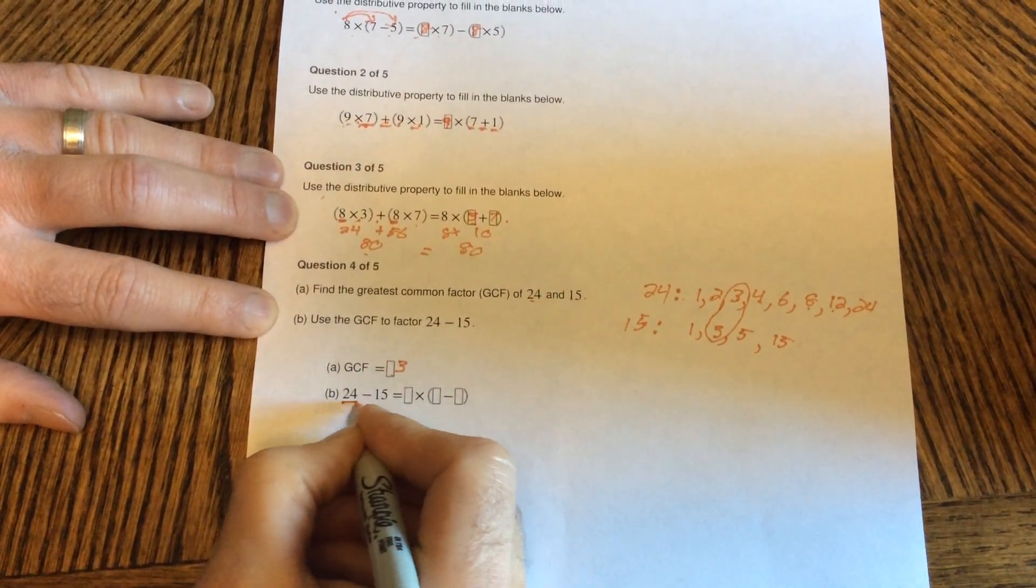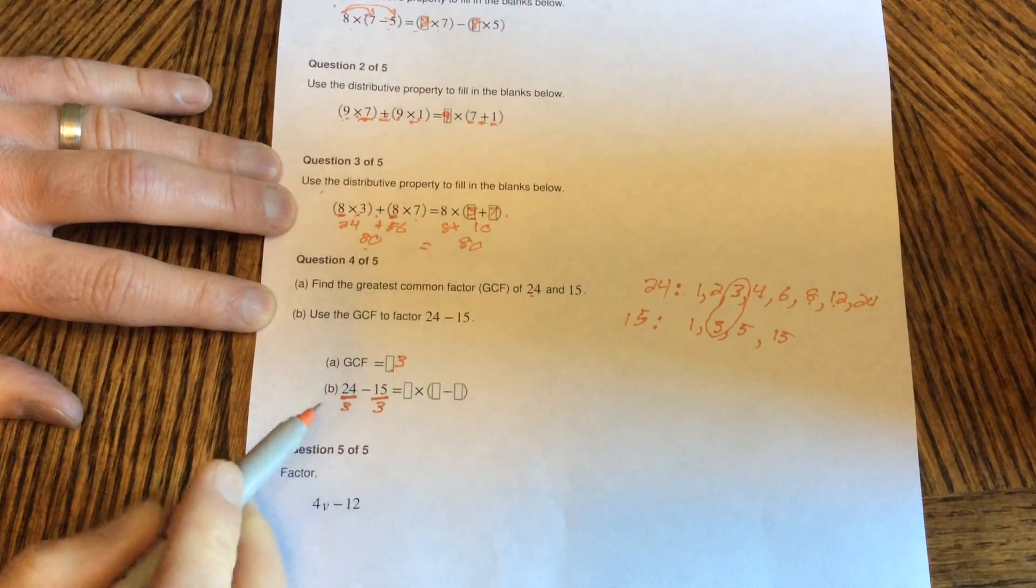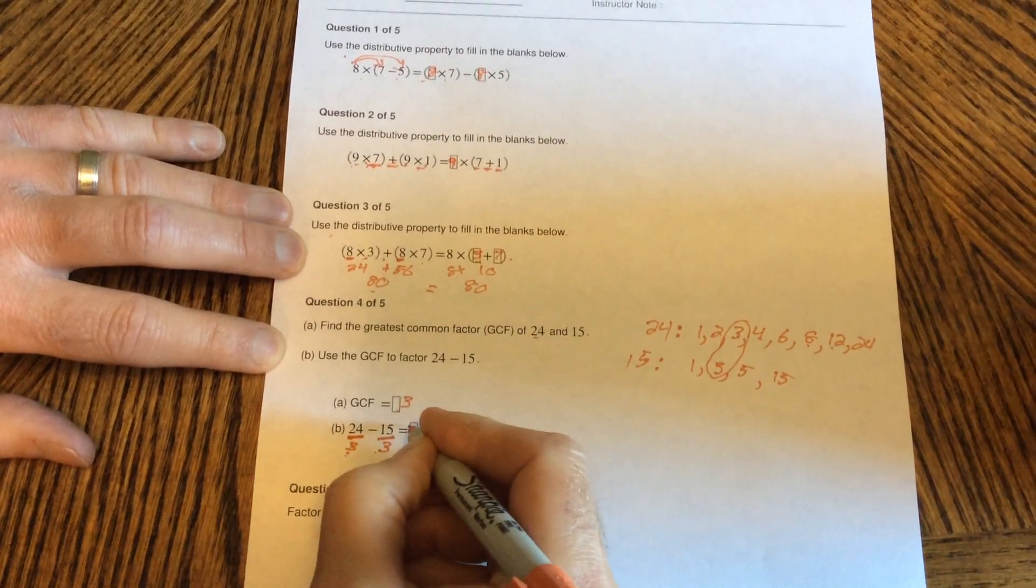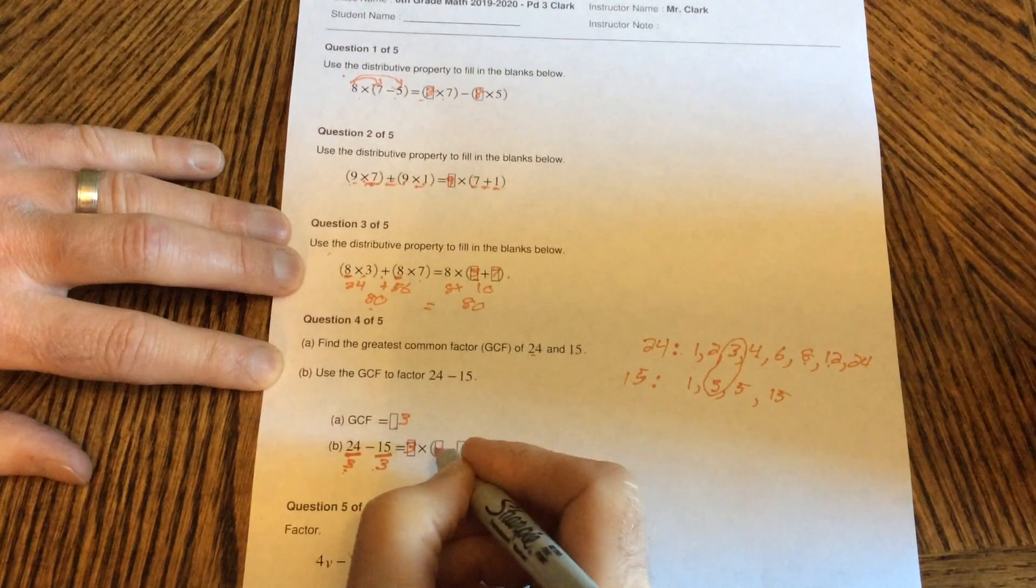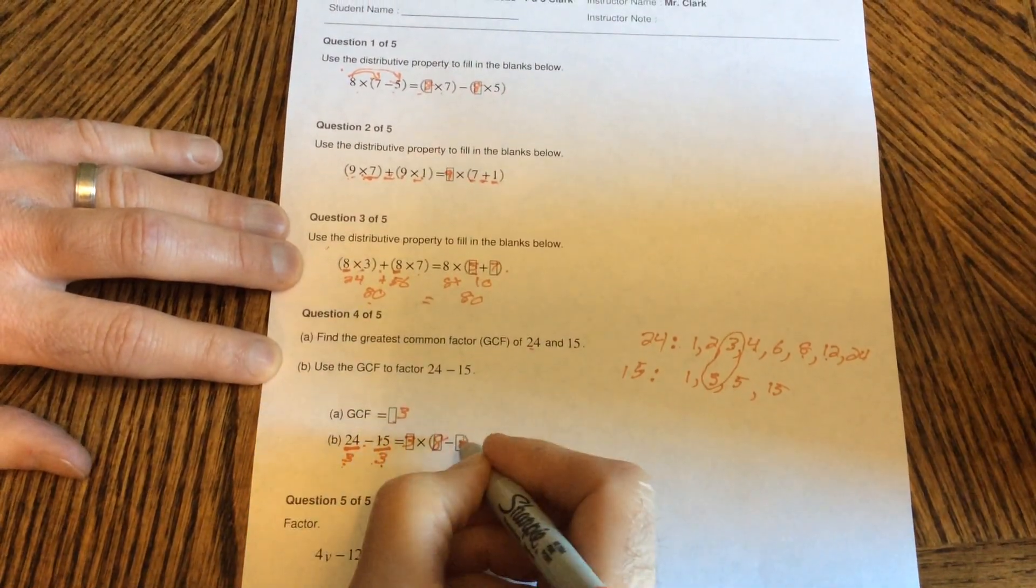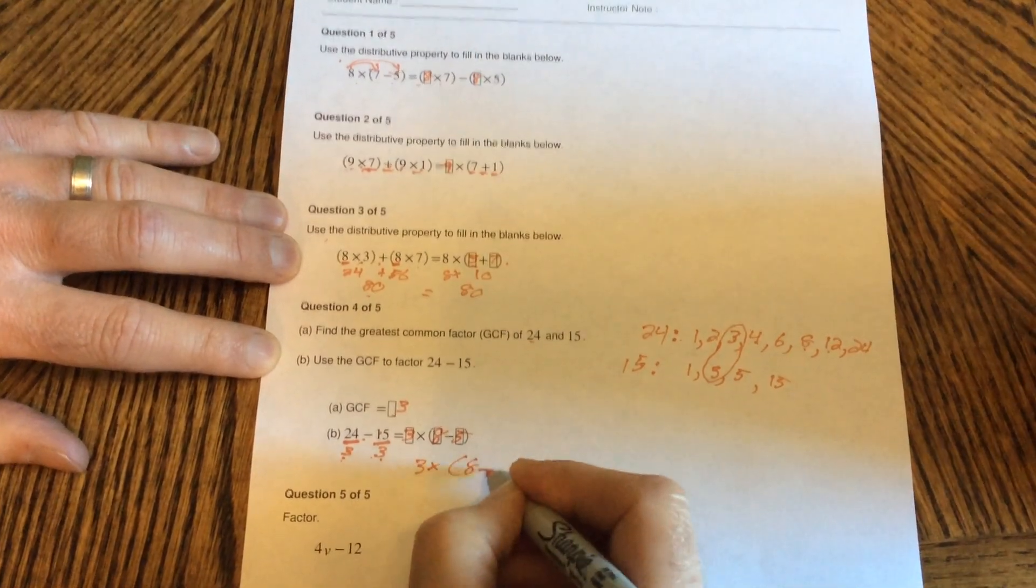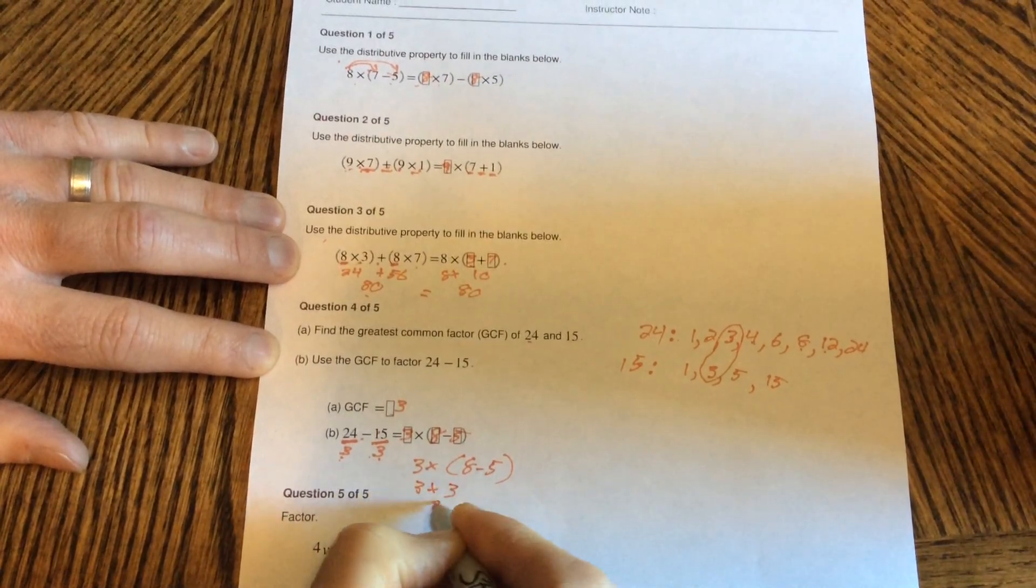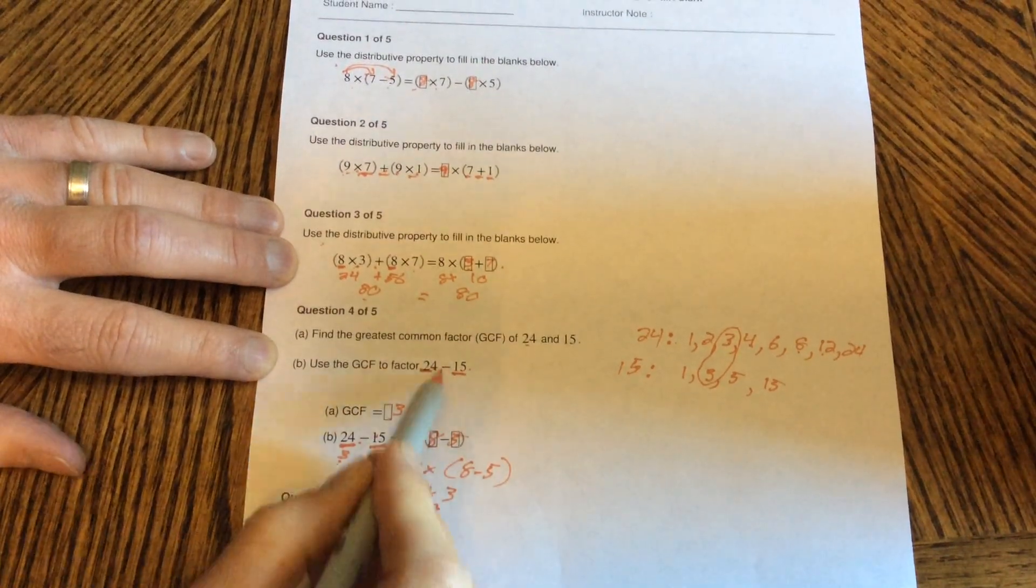So now I'm going to factor 3 out of 24 and 3 out of 15. I'm going to divide them both by 3. Since I divided them both by 3, 3 goes outside the parentheses. 24 divided by 3 is 8 minus 15 divided by 3 is 5. So my final answer is 3 times 8 minus 5. I could go ahead and solve that. 3 times 3 is 9. 24 minus 15 is 9. Same answer.